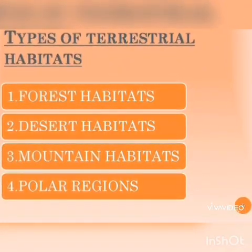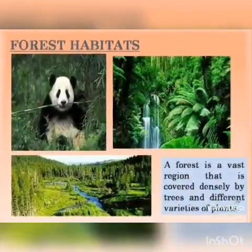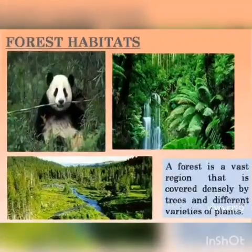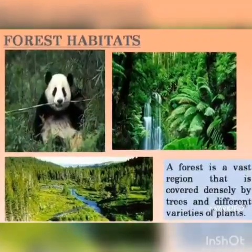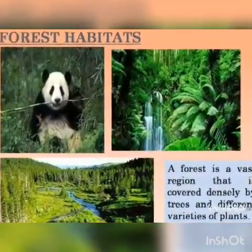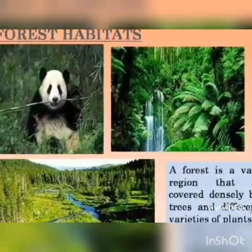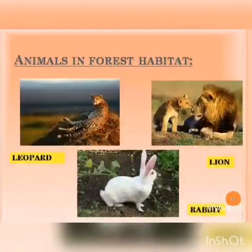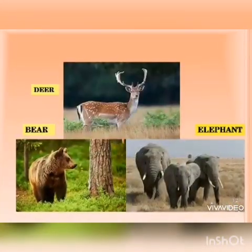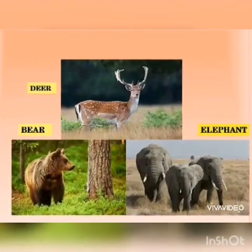First we will talk about forest habitat. A forest is a very large area that is densely covered with trees and different varieties of plants. 70 to 80 percent of wild animals live in these forests. For example, lion, rabbit, leopard, deer, bear and elephant.